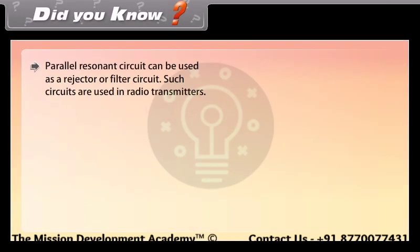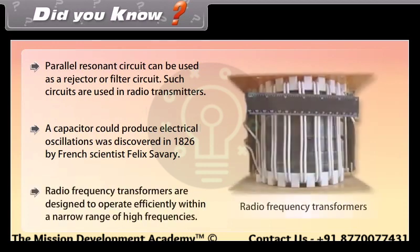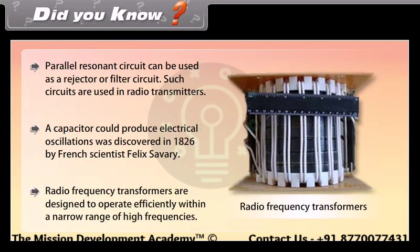Did you know? Parallel resonant circuits can be used as rejector or filter circuits, and such circuits are used in radio transmitters. A capacitor could produce electrical oscillations — this was discovered in 1826 by French scientist Felix Savary. Radio frequency transformers are designed to operate efficiently within a narrow range of high frequencies.